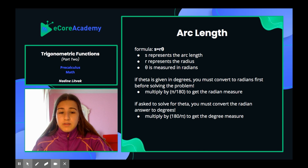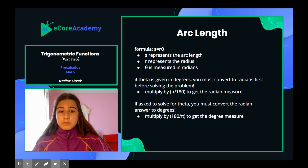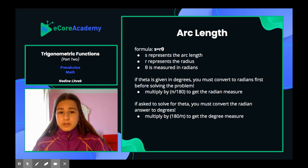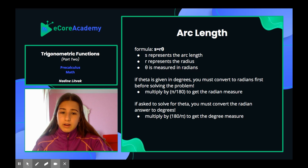If asked to solve for theta, you must convert the radian answer to degrees — this is the exact opposite. You multiply the radian measure by 180 over pi to get the degree measure. For example, 7 pi over 6 times 180 over pi gives you the degree measure, because the pi's cancel out and you're left with degrees.